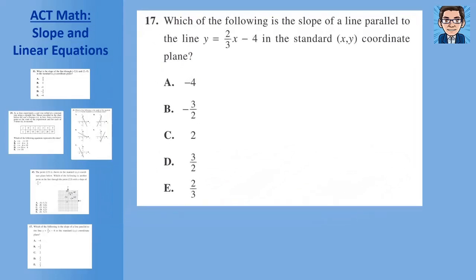Problem 5: Find the slope of a line parallel to the given line. A parallel line has the same slope. The slope of the given line is two over three, so any parallel line also has slope two over three. The answer is choice E.